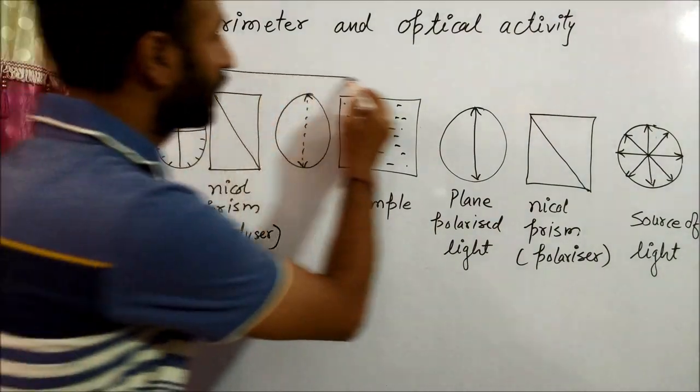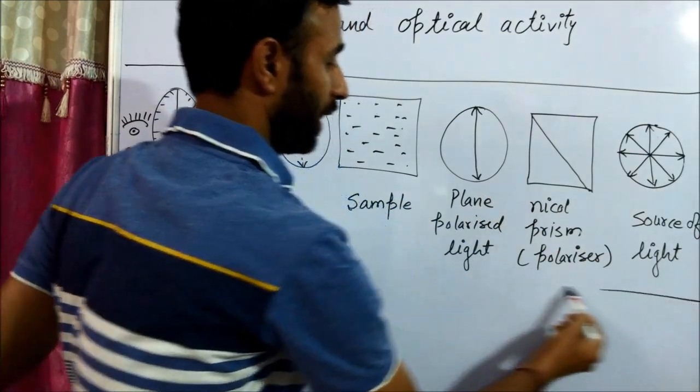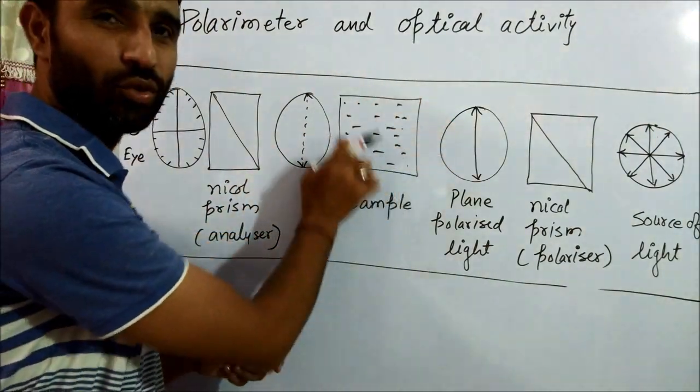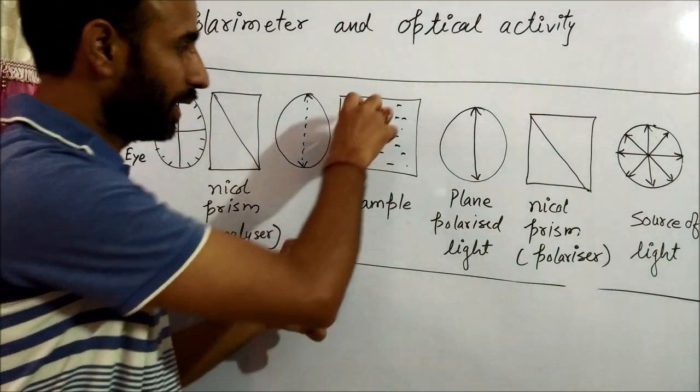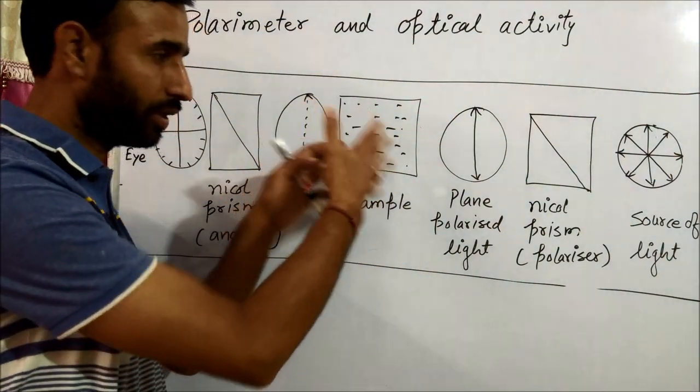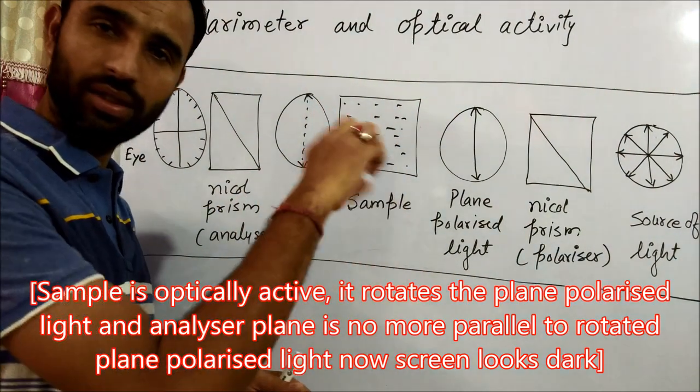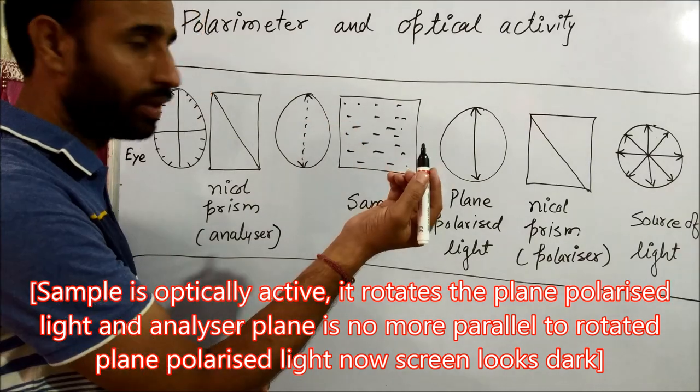Now, after calibration, we replace this tube where solution is filled. We replace water by the given sample. We add aqueous solution of the substance. Now, what will happen?